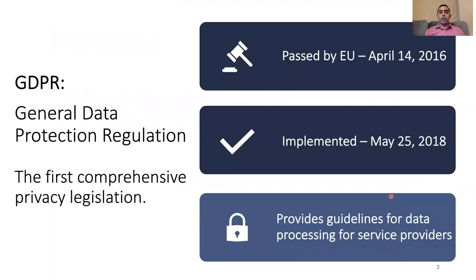The GDPR, or the General Data Protection Regulation, is the EU's approach to regulating the data privacy of individuals. It passed in 2016 and was implemented in 2018. Among many things, it provides guidelines for data processing to be followed by service providers or companies. At the time, the GDPR was the first and most comprehensive privacy legislation.